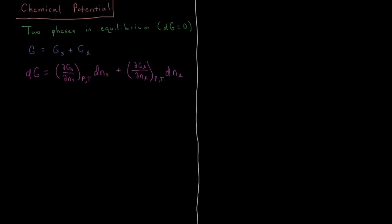If we hold the total number of particles constant, then the change in the number of particles of the solid is going to be the negative of the change in the number of particles in the liquid. For every particle that the solid gains or loses, the liquid must lose or gain a corresponding particle. We cannot create particles out of nowhere — that would violate the first law of thermodynamics. All of our particles are going to exist forever.